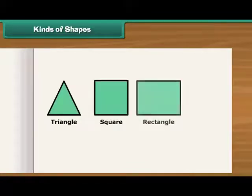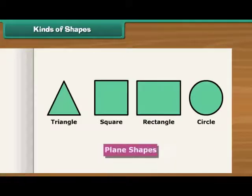The shapes that we draw on paper such as triangles, squares, rectangles, circles, etc. are called plain shapes.